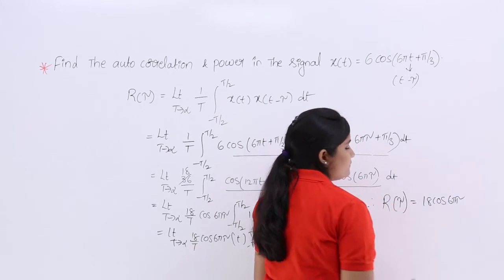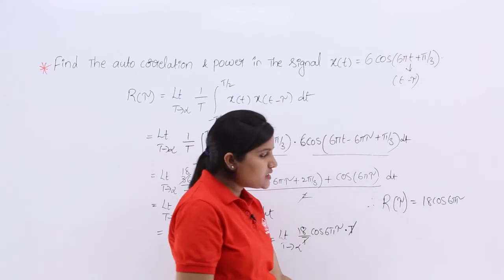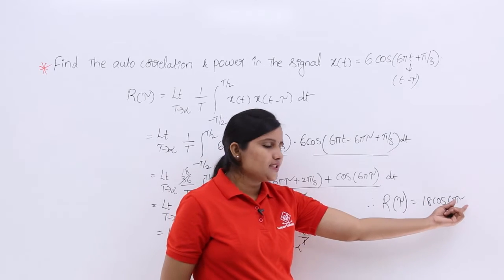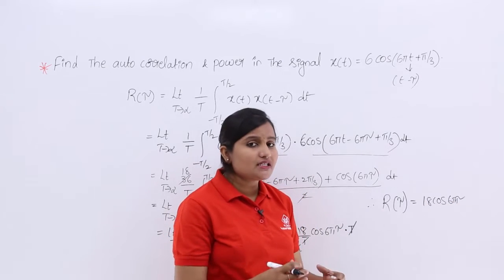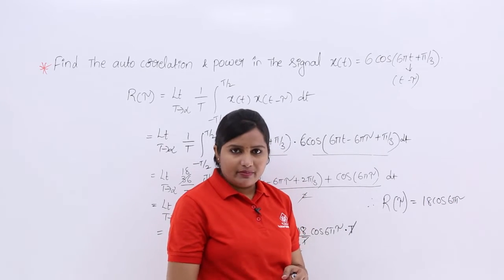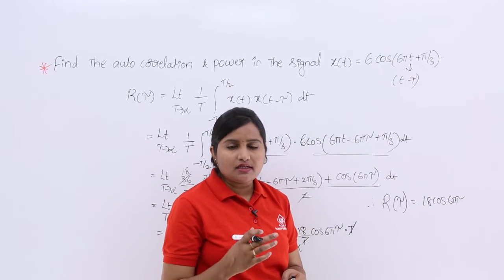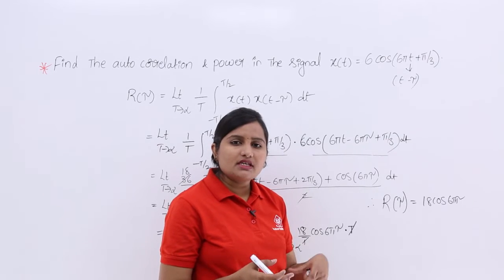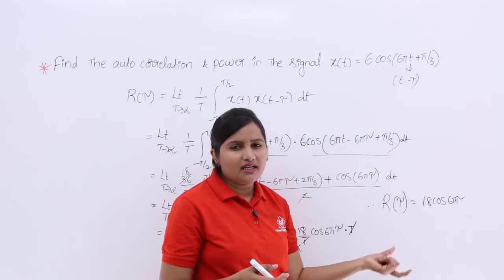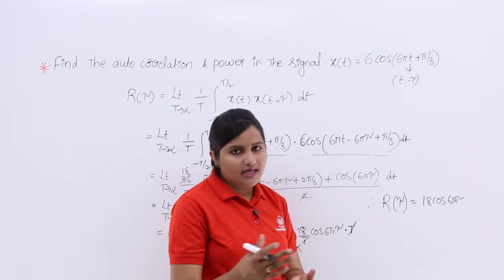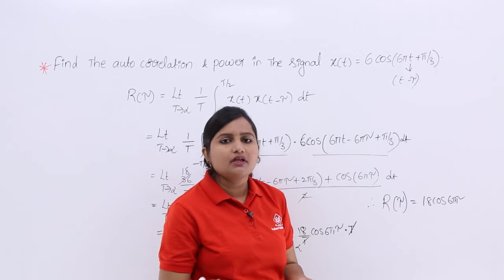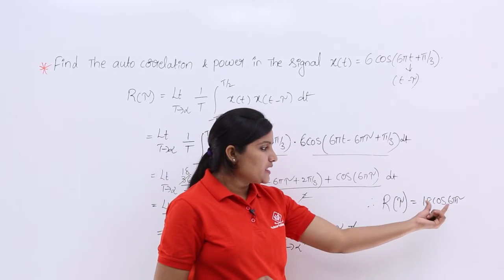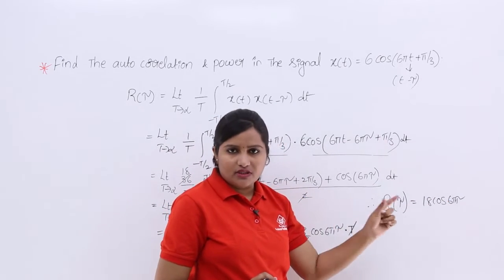Therefore, the autocorrelation function r(τ) is equal to 18cos(6πτ). This is your autocorrelation function. Always note that autocorrelation function is expressed in terms of τ.